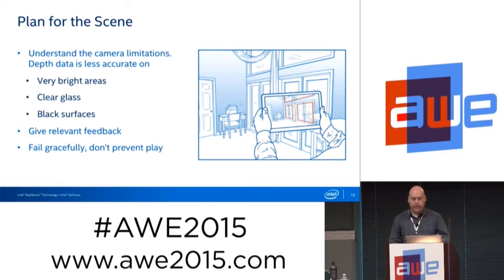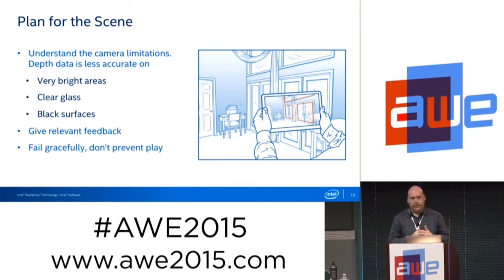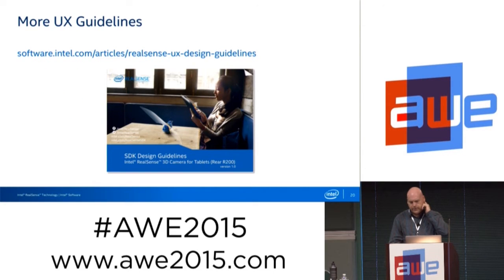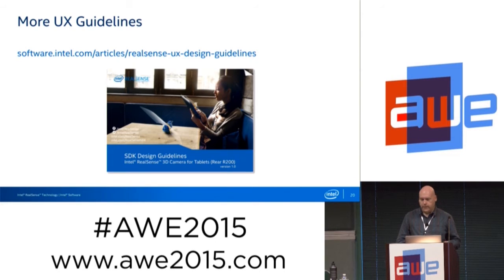Likewise, failing gracefully in scenarios where there may be too many difficult surfaces in the environment is key. Inactive camera interactions can come into play here — even though this is augmented reality building on your real environment, you don't want people blocked from playing because they don't have the right types of blocks. Fallback situations, especially in inactive mode, are really important to make these games effective. We have the first version of UX design guidelines on the web in the developer zone, and we welcome feedback from developers.